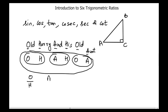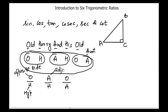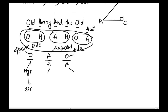The pairs are: O divided by H, A divided by H, and O divided by A. Here, O stands for opposite side, H stands for hypotenuse, and A stands for adjacent side. These pairs correspond to: sine (opposite/hypotenuse), cosine (adjacent/hypotenuse), and tangent (opposite/adjacent).